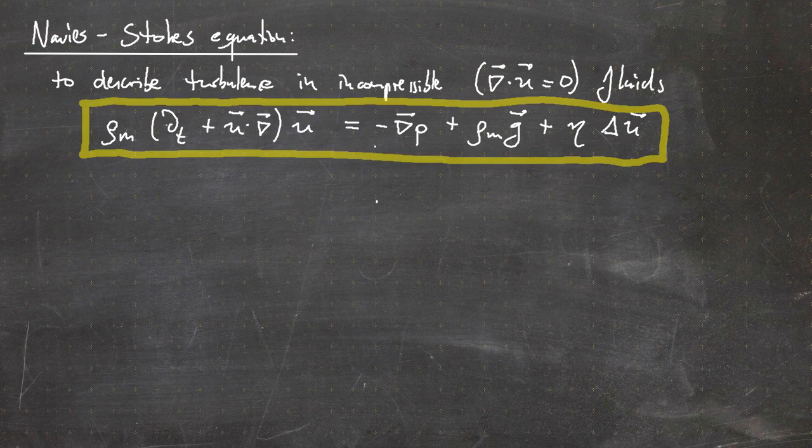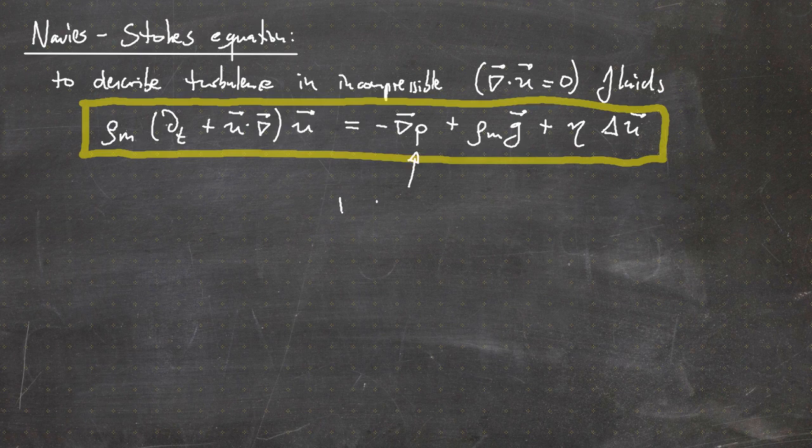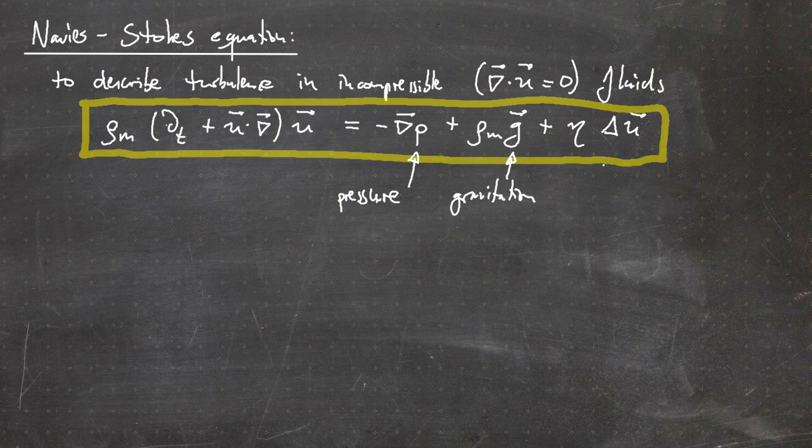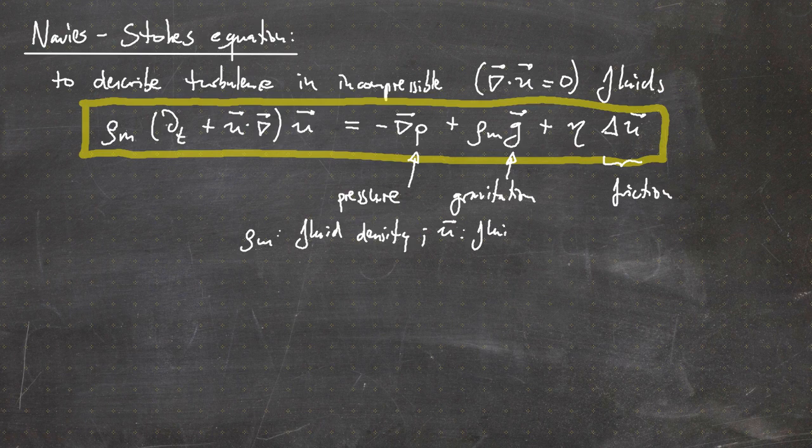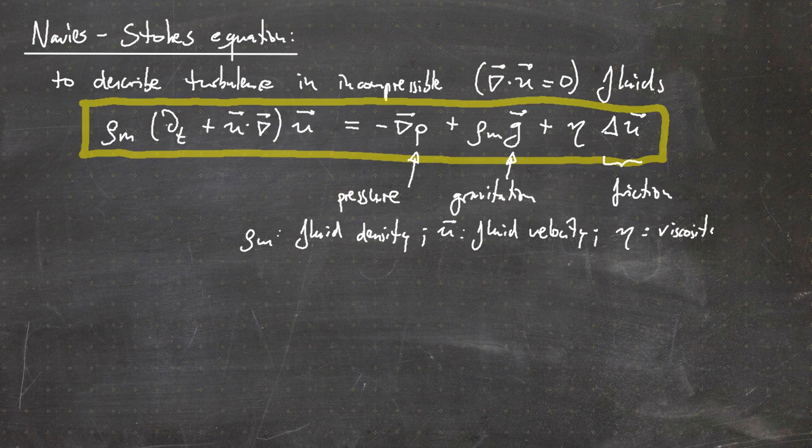Here we have the pressure, then this is the gravitation, and then here this is the friction, Laplace times the velocity. We have ρₘ, this is the fluid density. Then, of course, u, which is the fluid velocity. And finally, η, the viscosity of the medium.